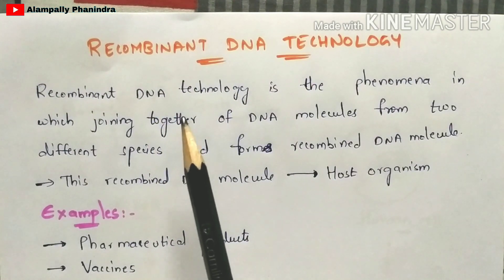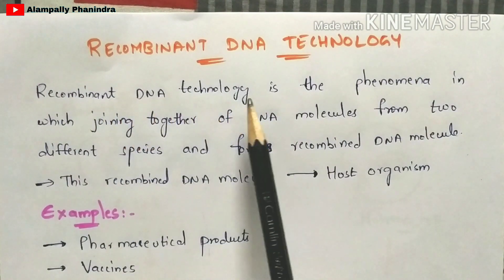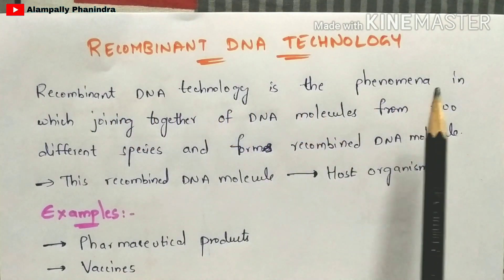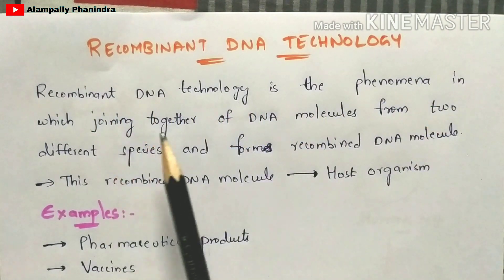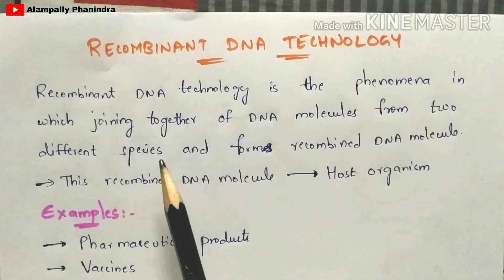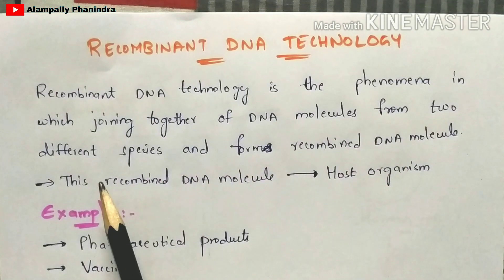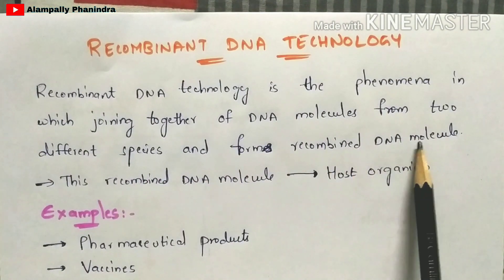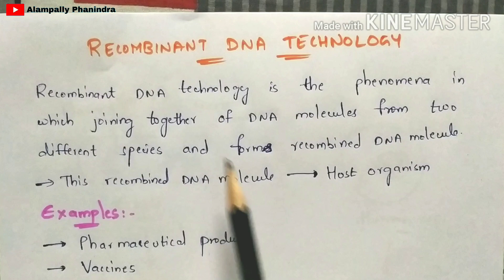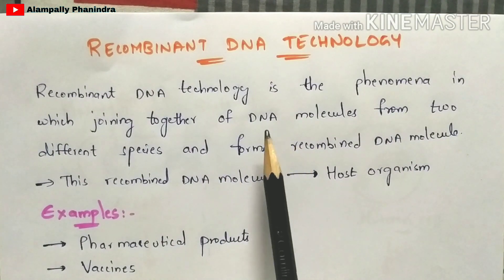Recombinant DNA technology, also called rDNA technology, is a phenomenon in which DNA molecules from two different species are joined together to form a recombined DNA molecule. This recombined DNA molecule is called recombinant DNA.